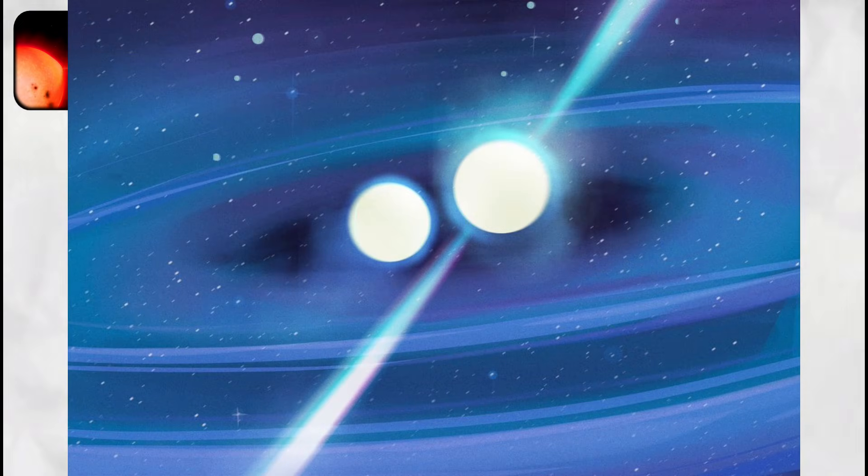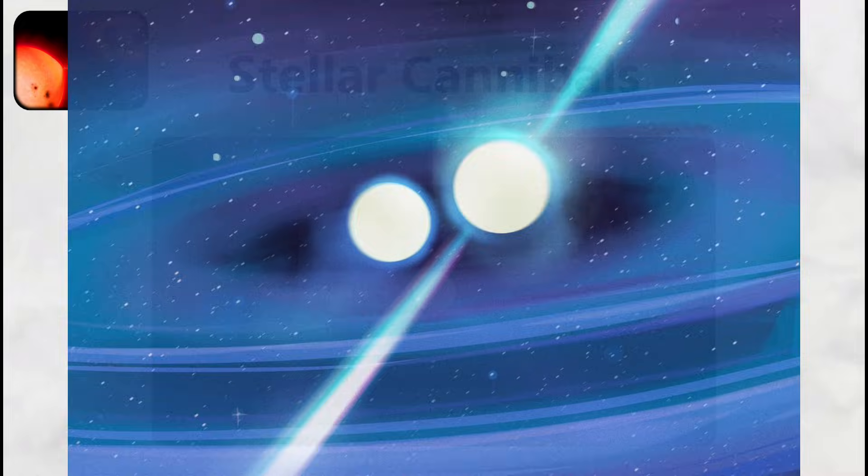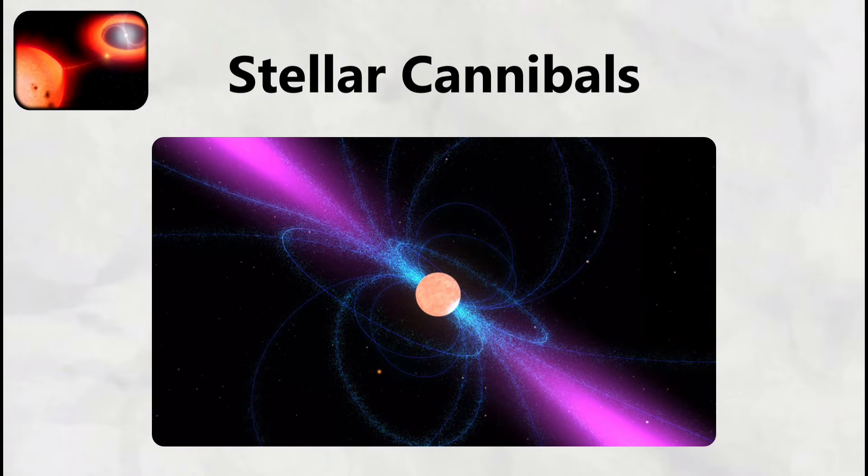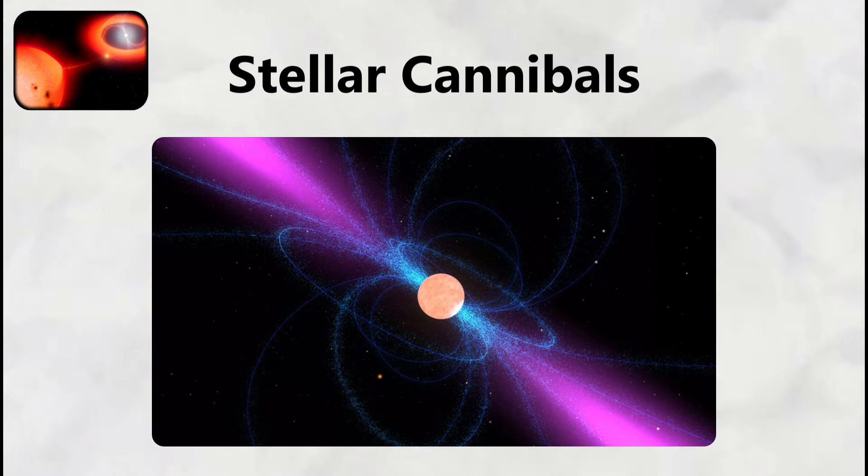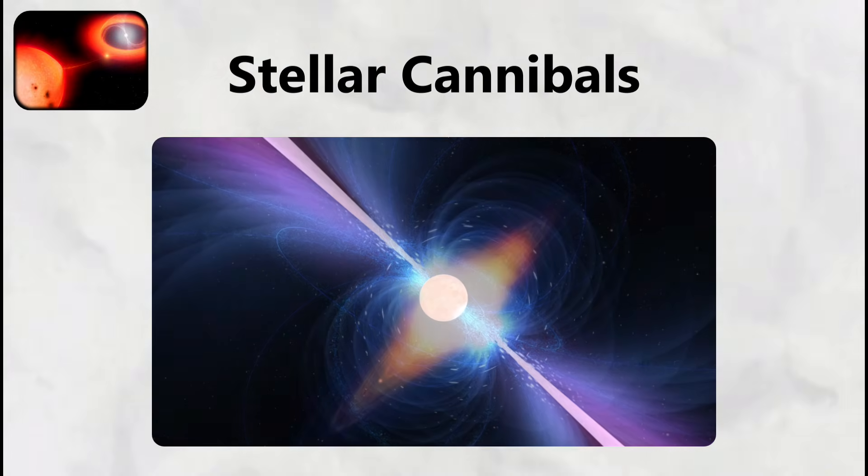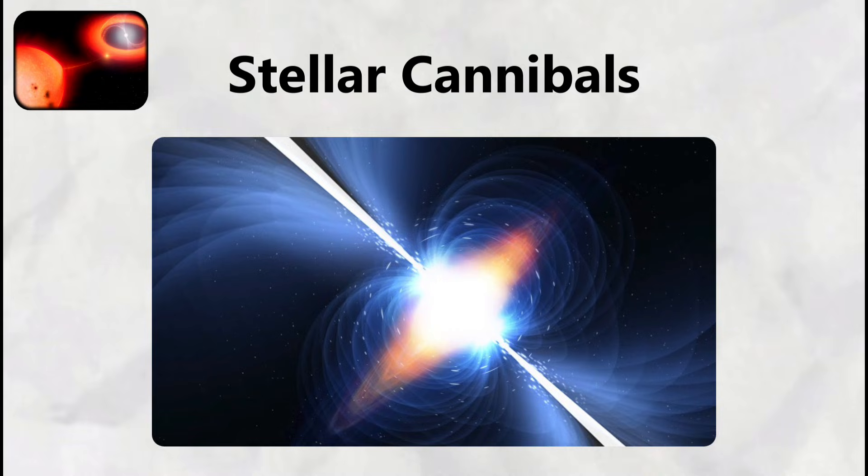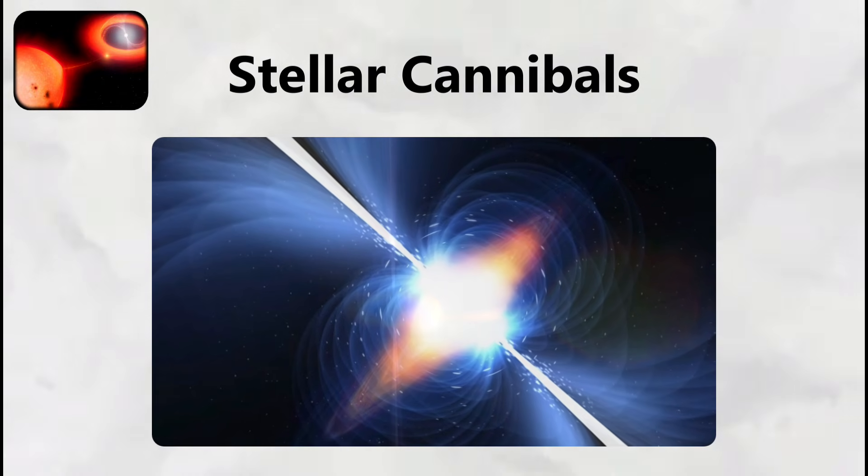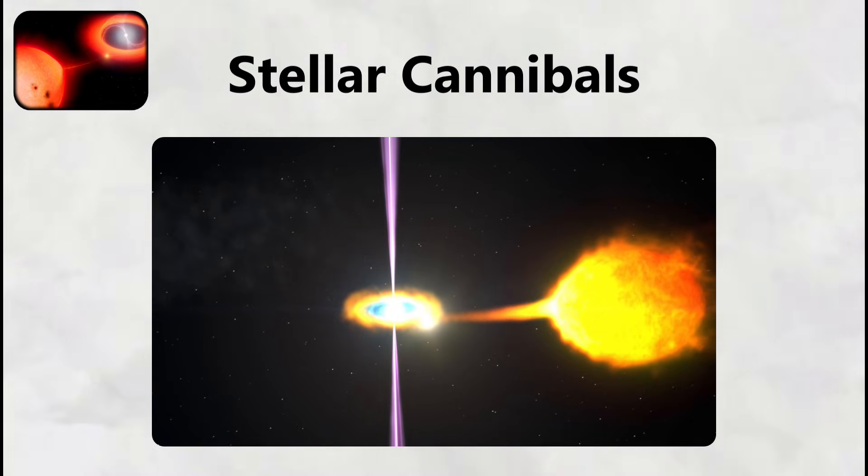The neutron star, designated PSR B1957 plus 20, has a mass 1.3 times that of our Sun, compressed into a sphere only 20 kilometers in diameter, creating gravitational forces so intense that a teaspoon of its material would weigh 6 billion tons on Earth.